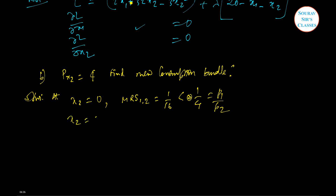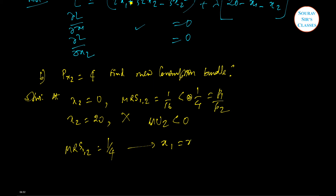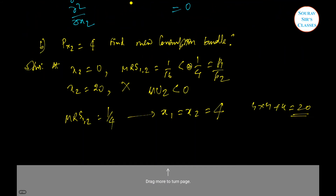The solution is also not at the other corner x2 equal to 20, because marginal utility would be negative there. Therefore the solution satisfies MRS equal to the price ratio 1/4. Solving, we get x1 equal to 4 and x2 equal to 4, and 4 times 4 plus 4 equals 20, confirming the total income is consumed.